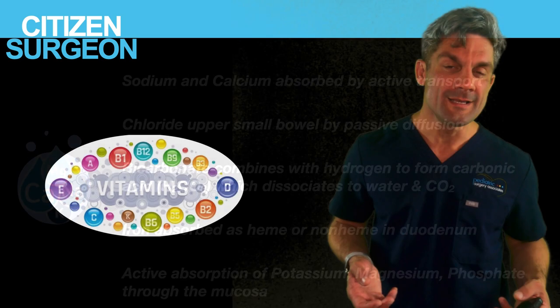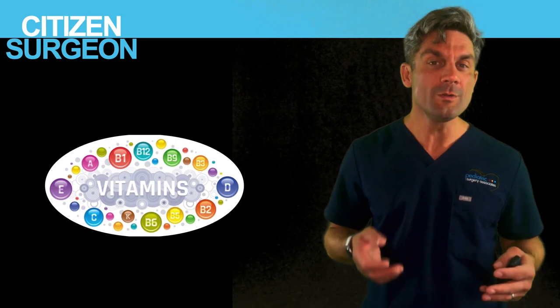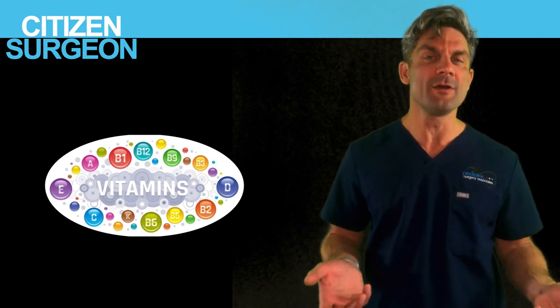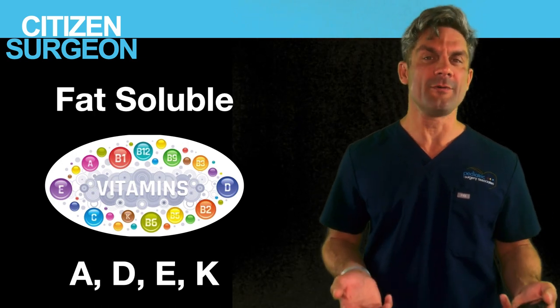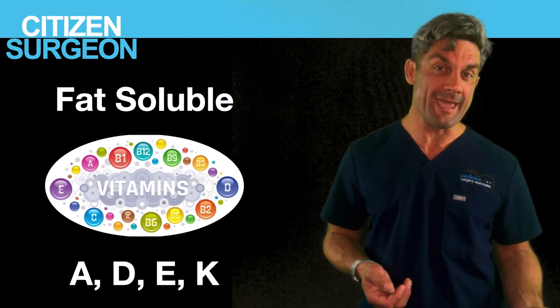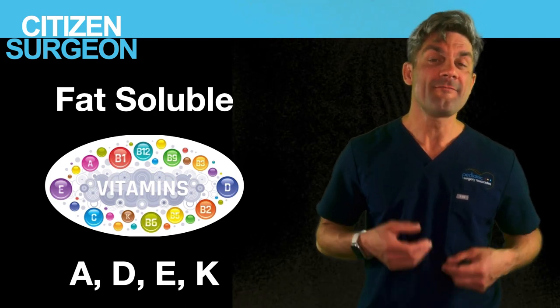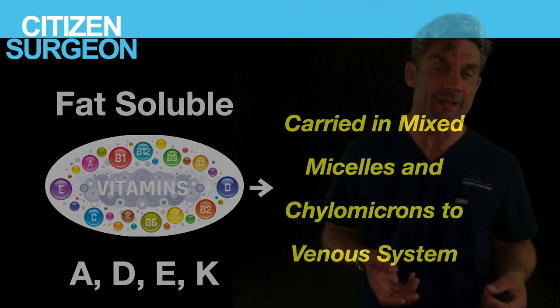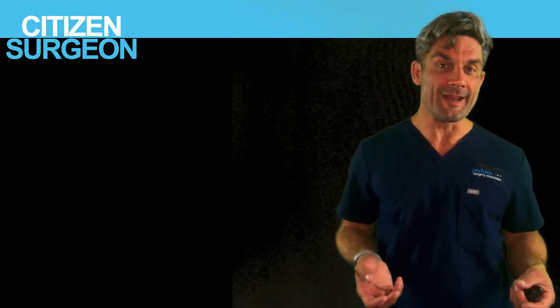Vitamins are split into two groups. Fat-soluble vitamins — A, D, E, and K — are carried in mixed micelles and absorbed in intestinal enterocytes, where they're incorporated into chylomicrons and transported to the venous system as discussed earlier.